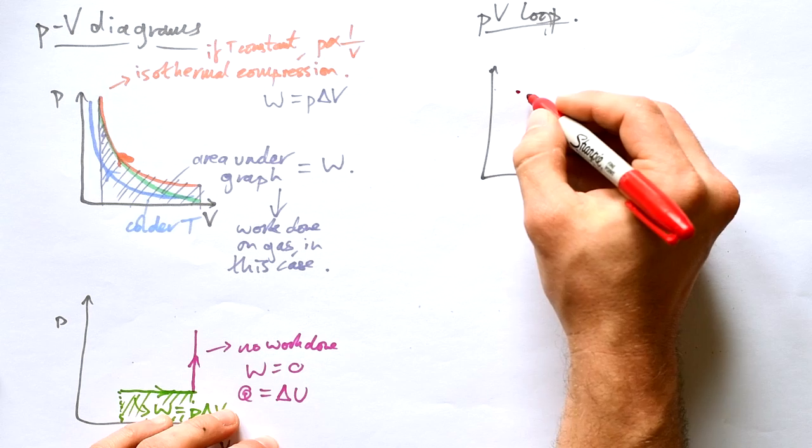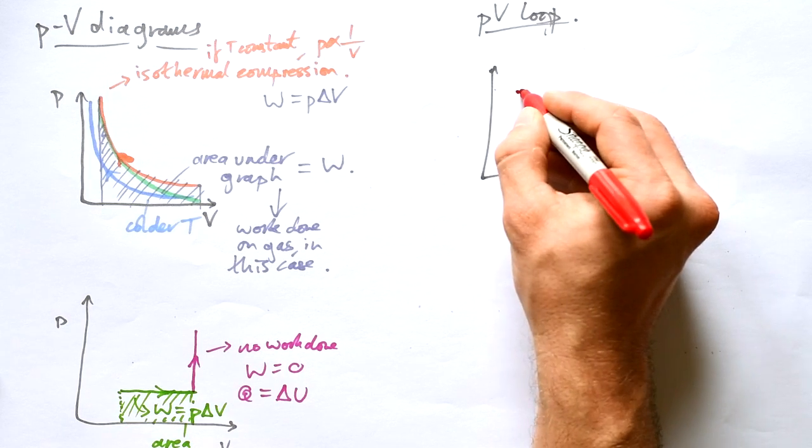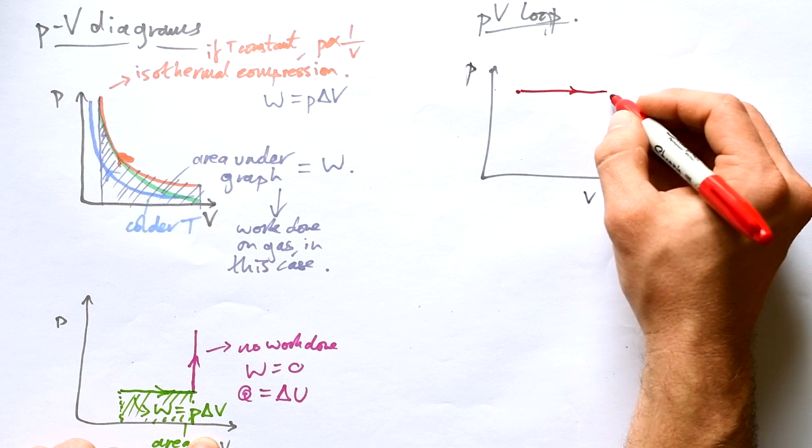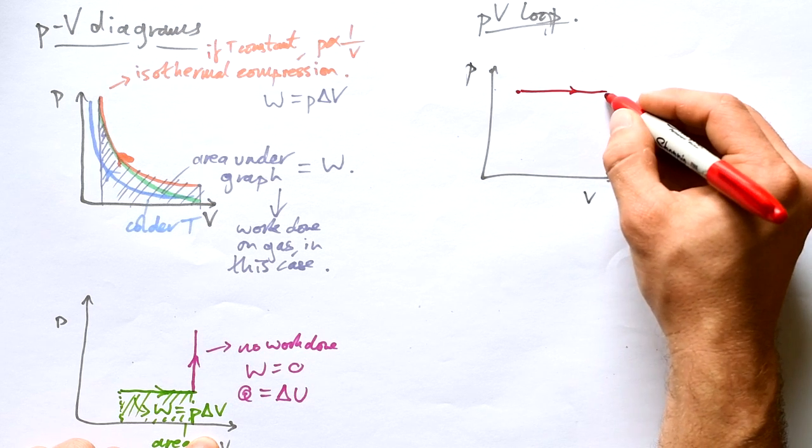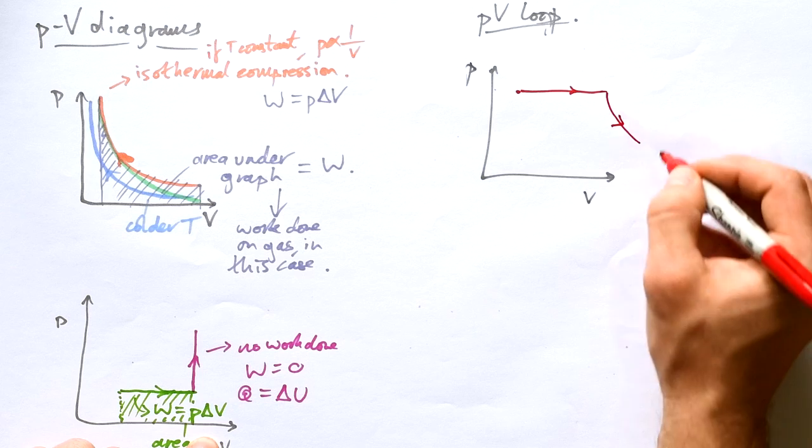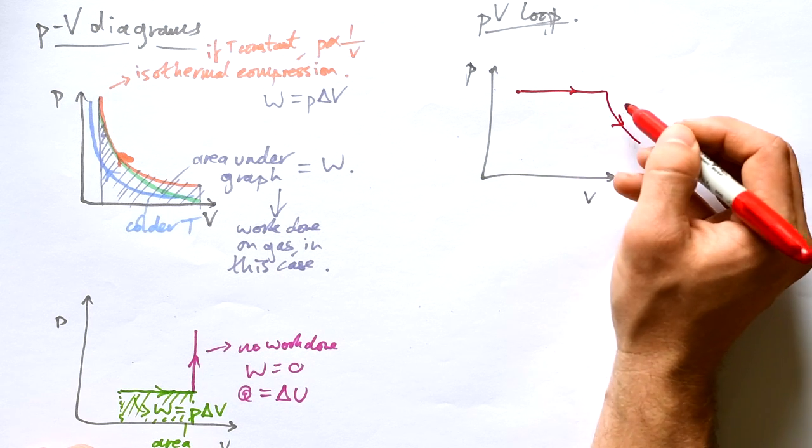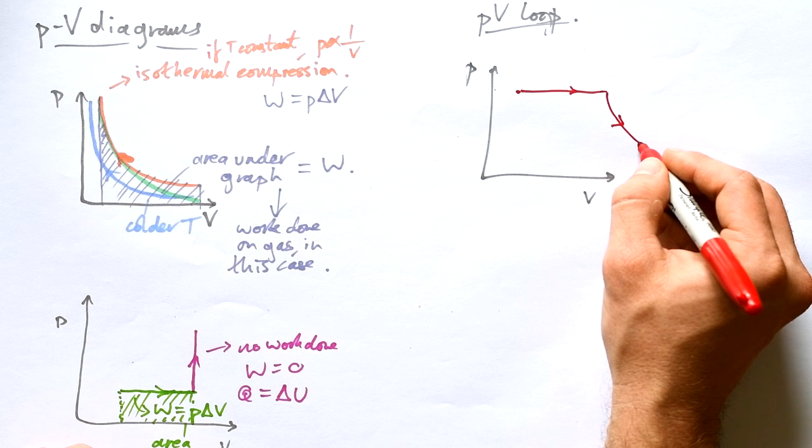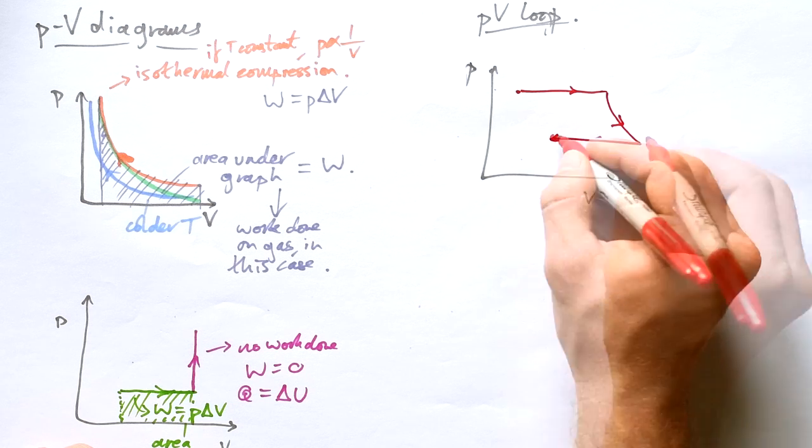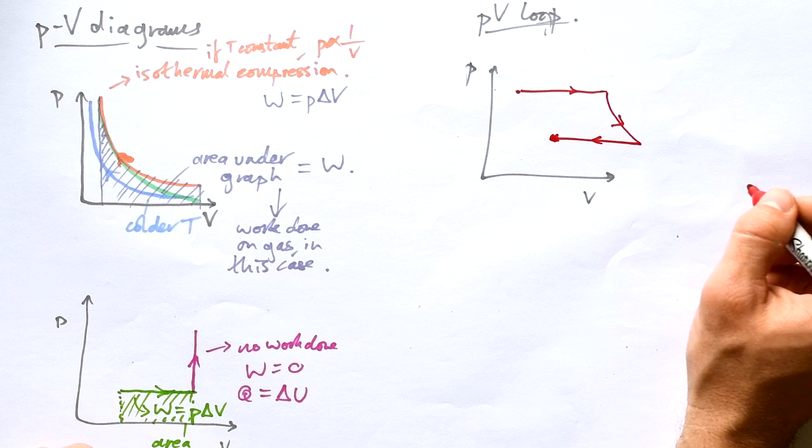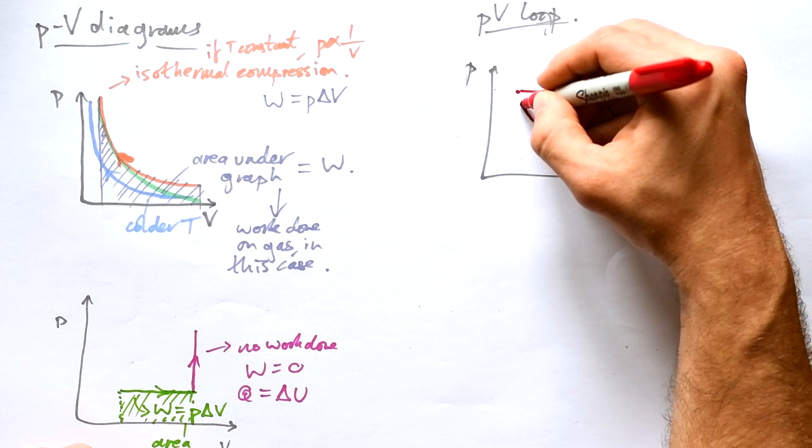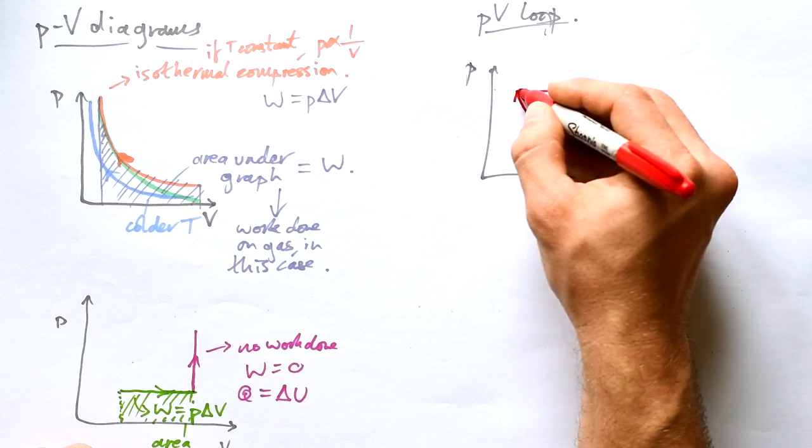So let's have a look at a PV loop. So let's say that we have a gas here and what we do, we do work on the gas. Let's say that it undergoes compression, could be isothermal, could be adiabatic. So work is done by the gas and then it undergoes expansion and then work is done on the gas. Keep drawing arrows at the end, you've got to draw them in the middle. And then finally it undergoes maybe isothermal compression, could be adiabatic.